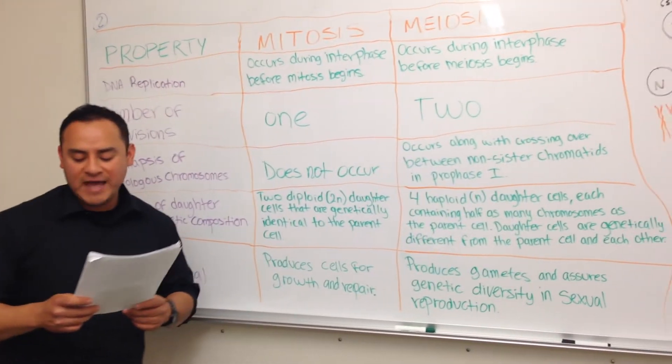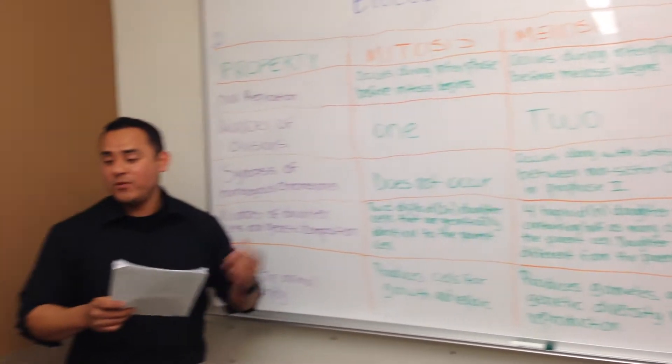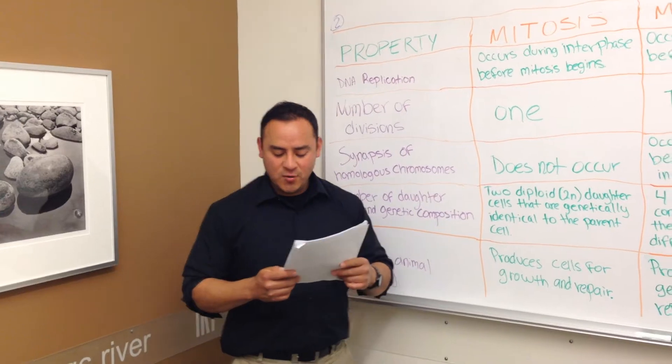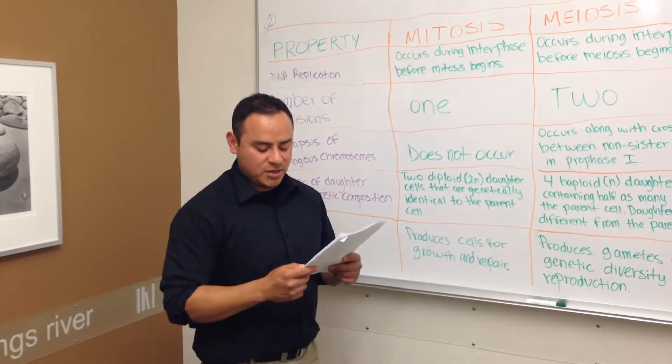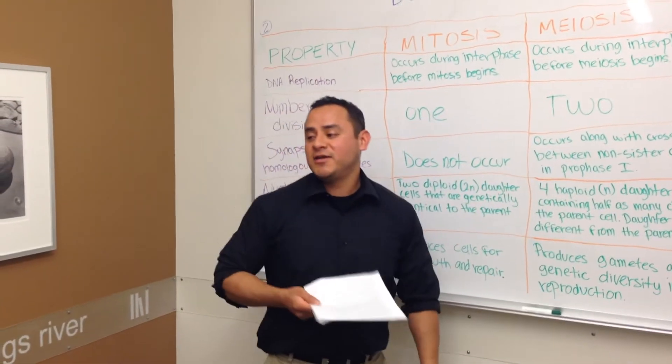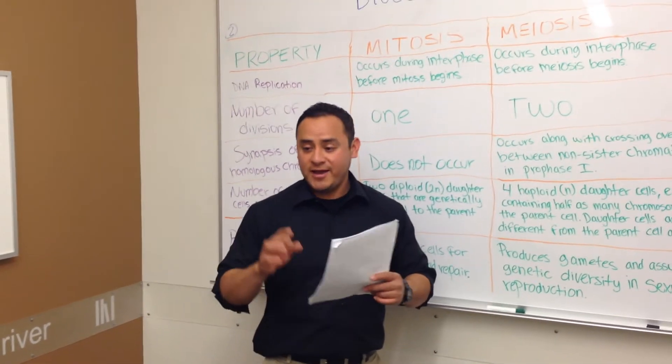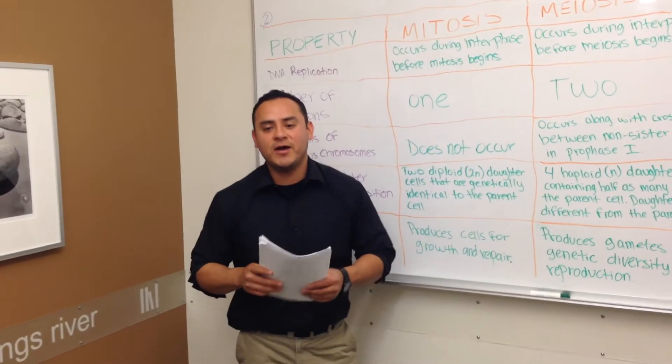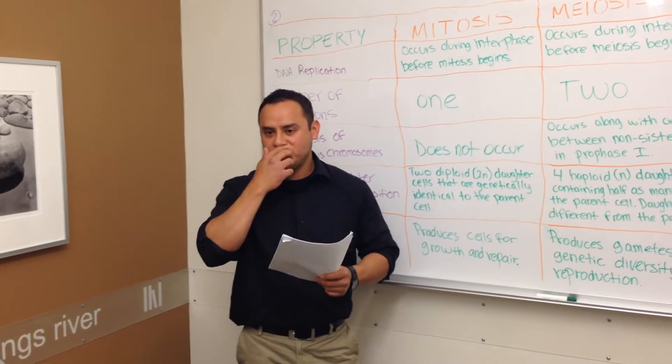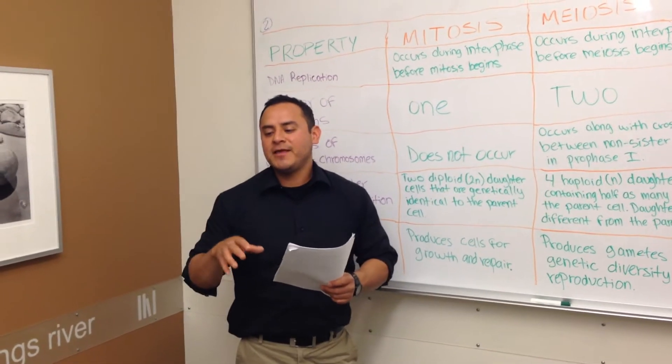Alright, so that will be the similarities and differences. So for the next part, we're also going to be discussing any differences that might have occurred. So for the next assignment, we're going to go ahead and talk about different models or different strategies that we look at in case something goes wrong during reproduction.